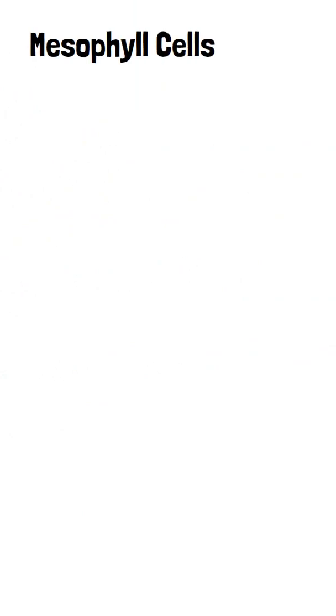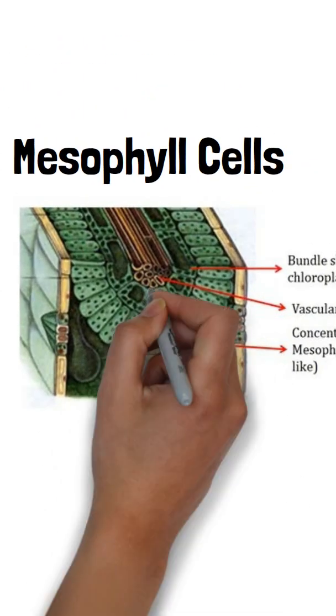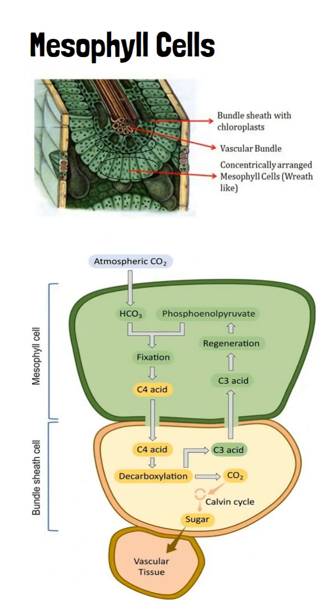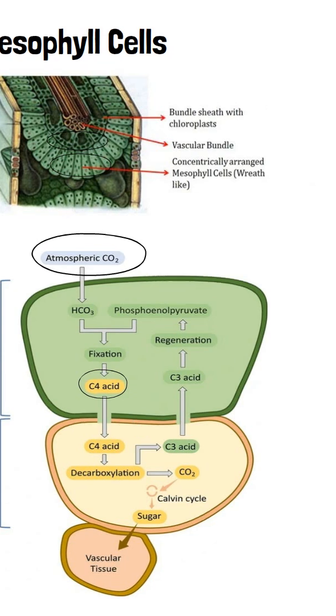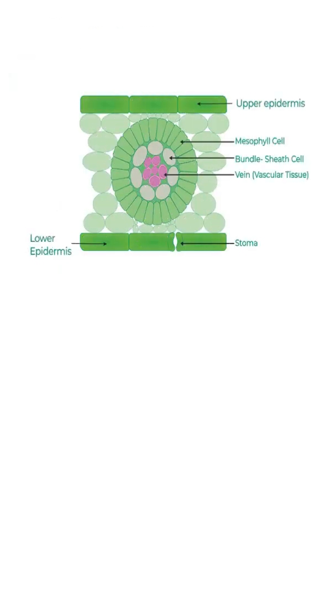Mesophyll cells are surrounded by bundle sheath cells, and their role is to fix carbon dioxide initially into a 4-carbon compound. That is why this process is called C4 photosynthesis.